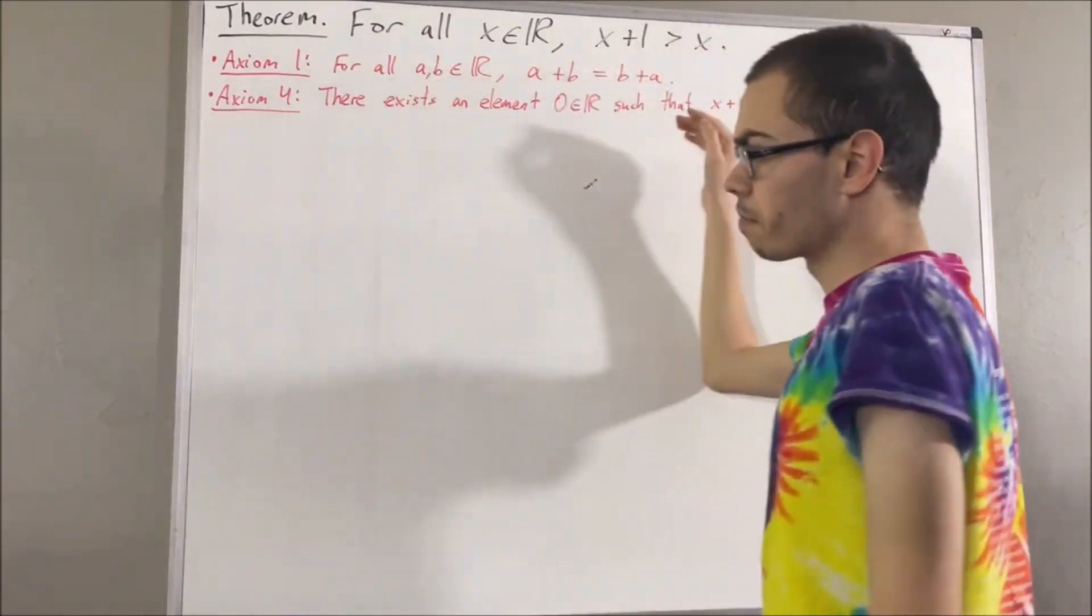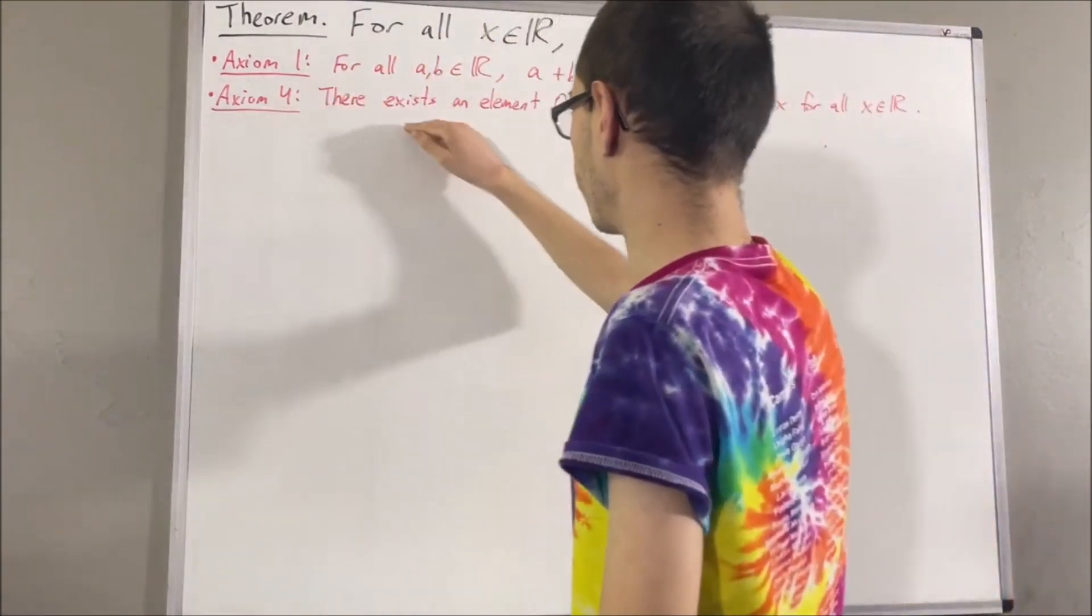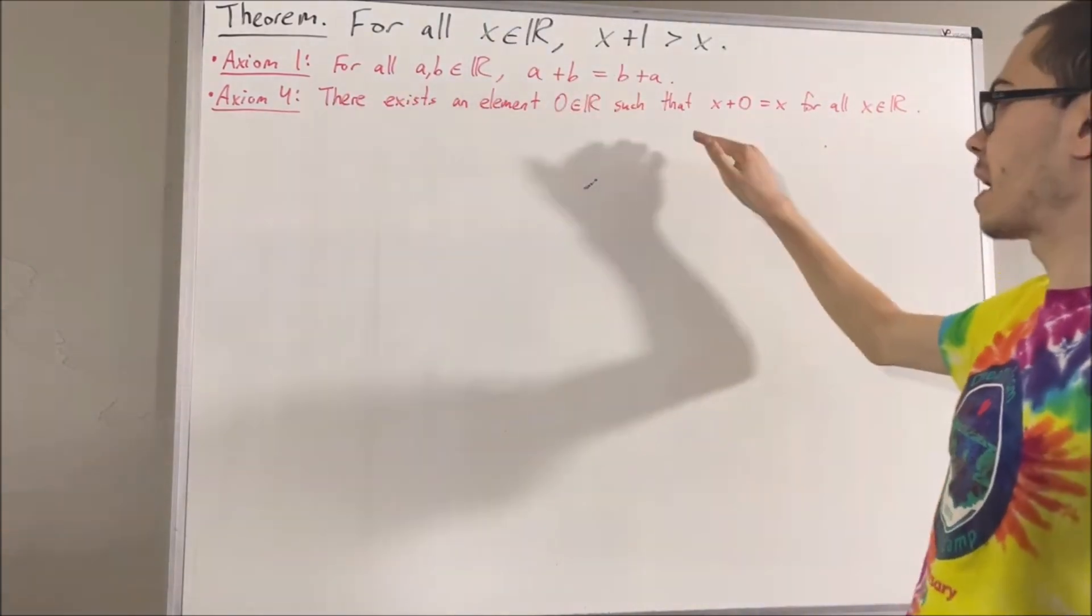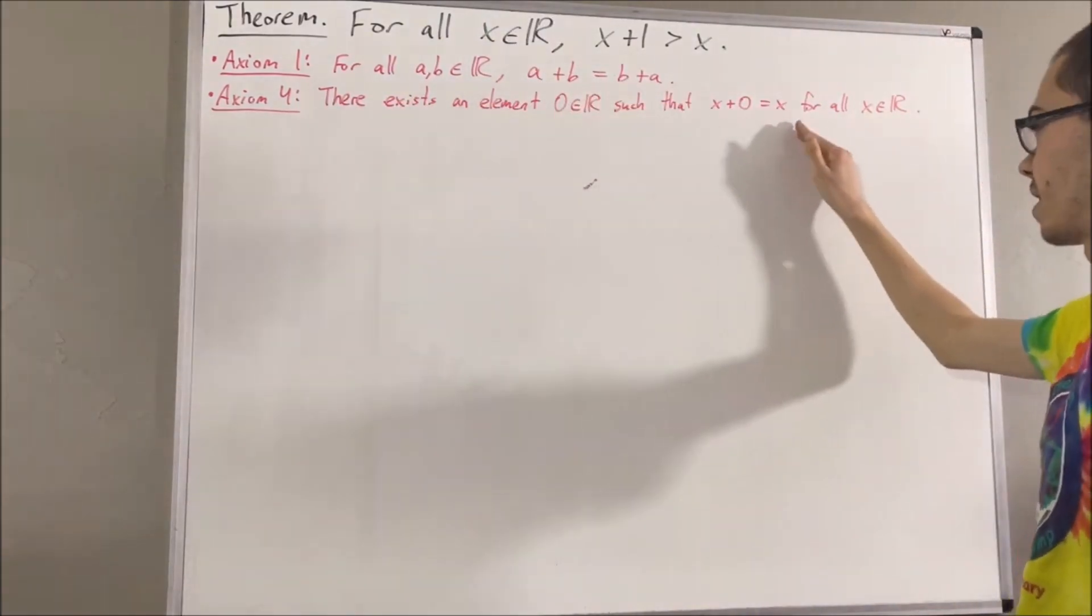Axiom 1 is just the commutative law, and axiom 4 tells us that there exists a real number, which we call 0, that has the property that x plus 0 is equal to x, for all real numbers x.